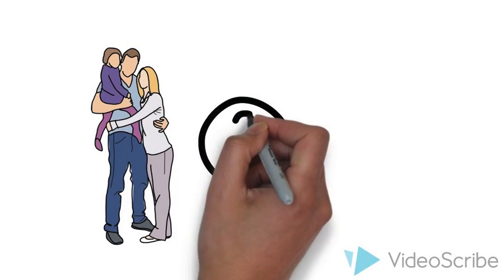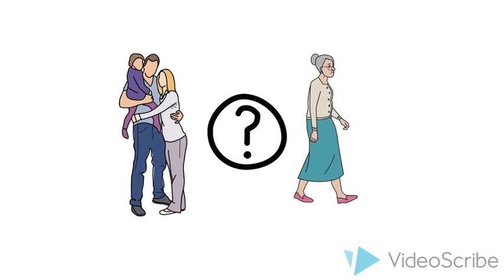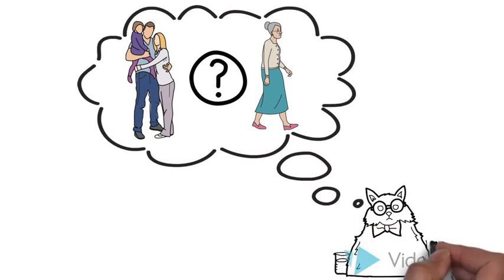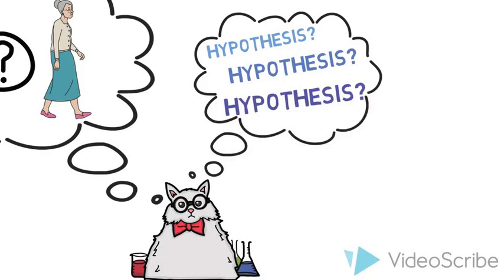Since according to Darwinian fitness, our main evolutionary goal is to reproduce, it is curious that we continue to live for years after our reproductive and evolutionary success. Scientists have come up with various hypotheses to explain why we live so long after we have offspring.